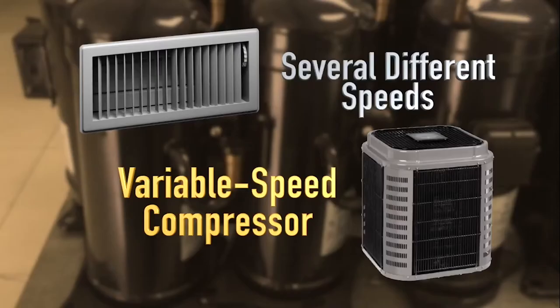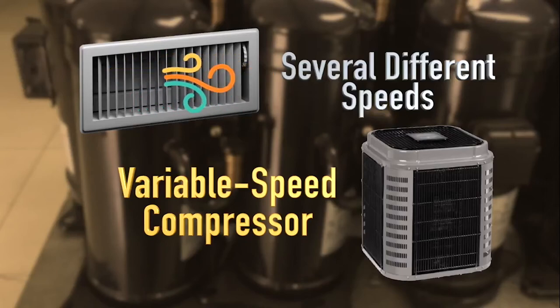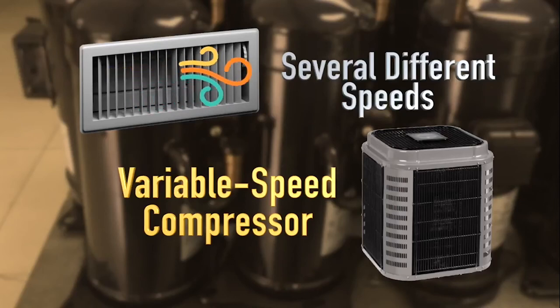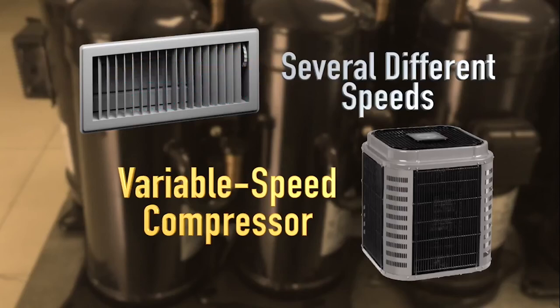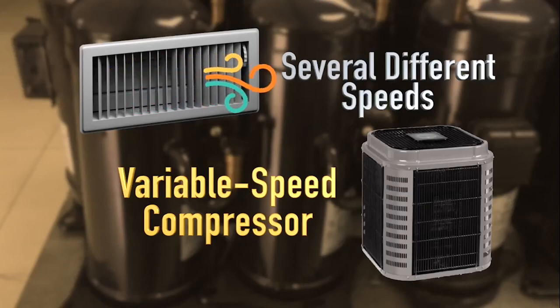Variable speed air conditioner compressors operate at different speeds depending on the need for cooling. Rather than being only 100% on or 100% off, they have several different speeds. This allows the AC to cool your home at lower speeds for longer periods of time, while still having the higher speeds for when the outdoor temperatures get really high.